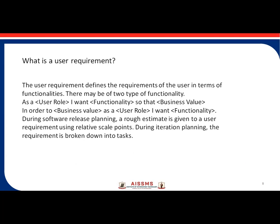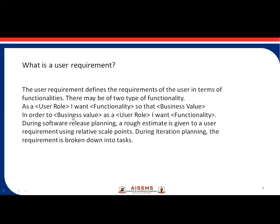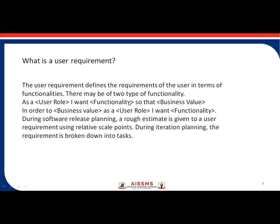Before the agile team plans their work, we have user requirements. A user requirement defines the requirements of the user in terms of functionalities. There may be two types: as a user role, I want a functionality so that I get a particular business value. During software release planning, a rough estimate is given to a user requirement using a relative scale point. During iteration planning, the requirement is broken down into tasks, which are allocated to different teams or a single team can work on multiple tasks.